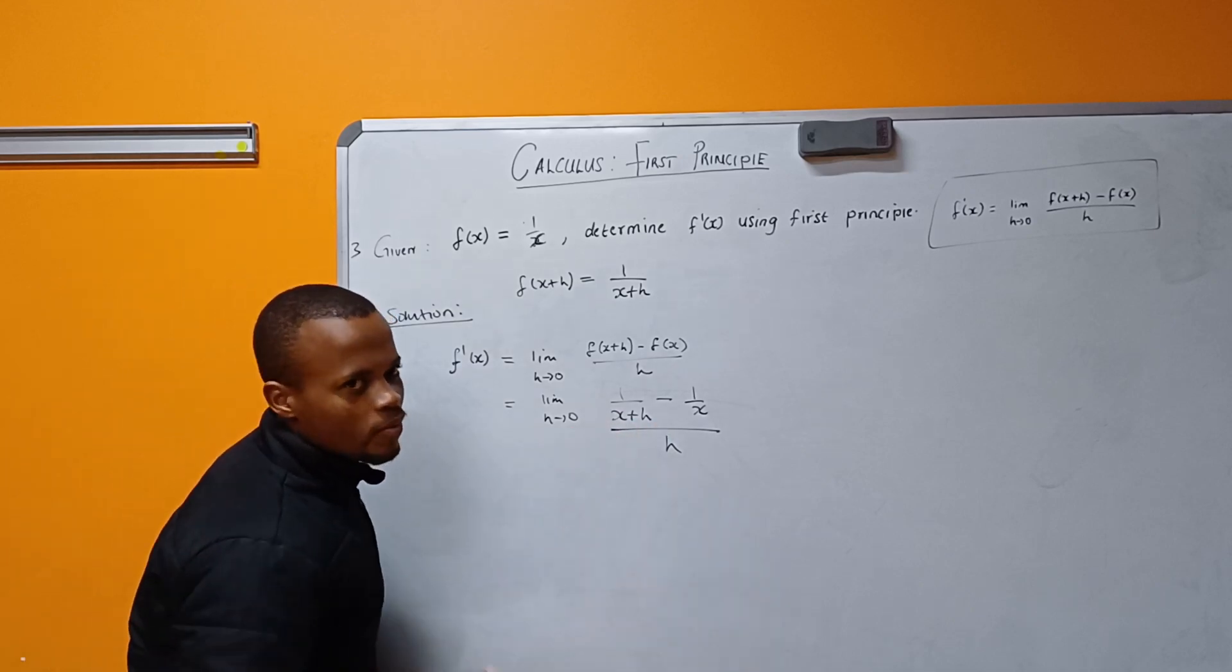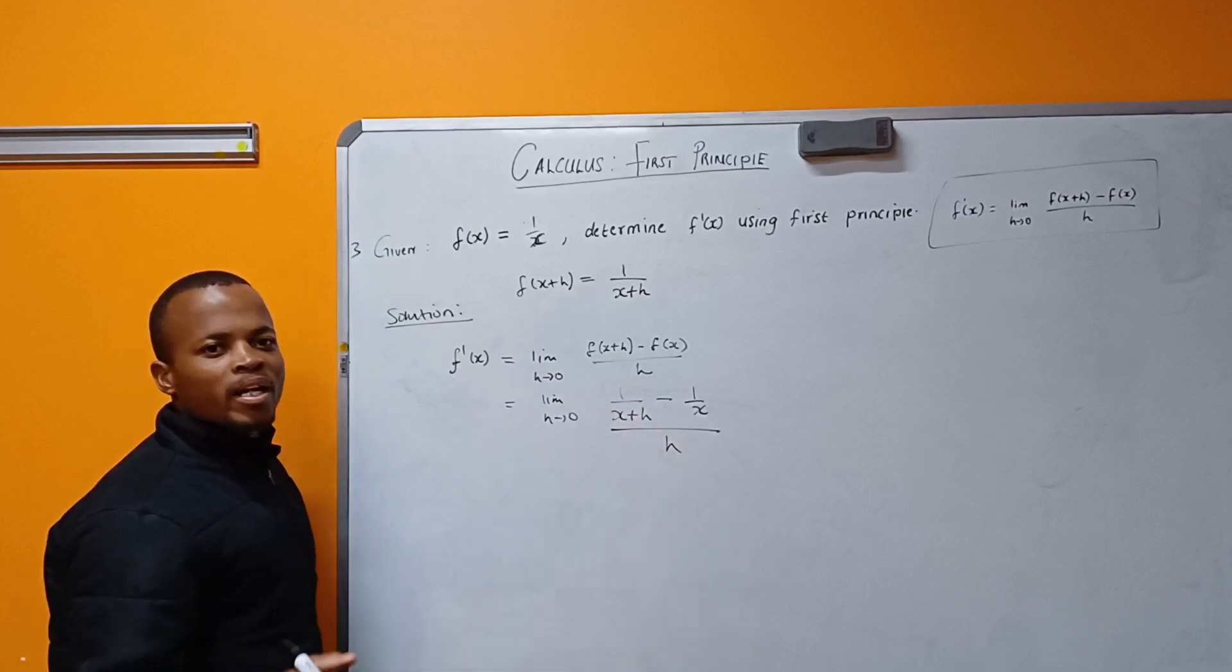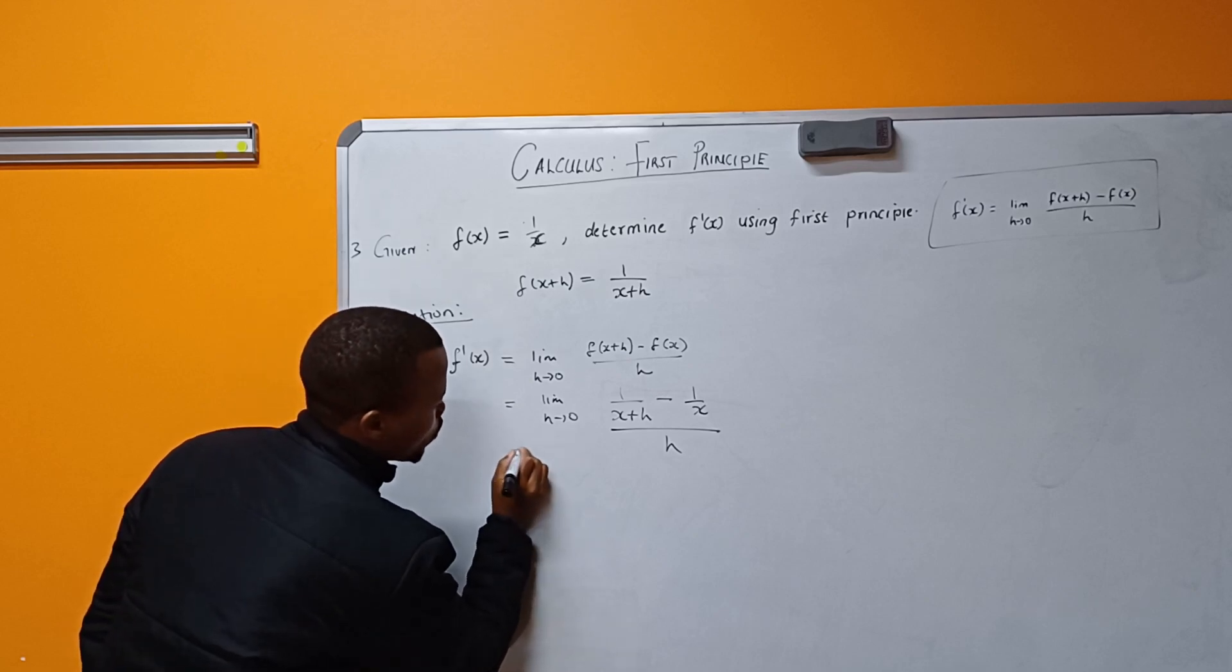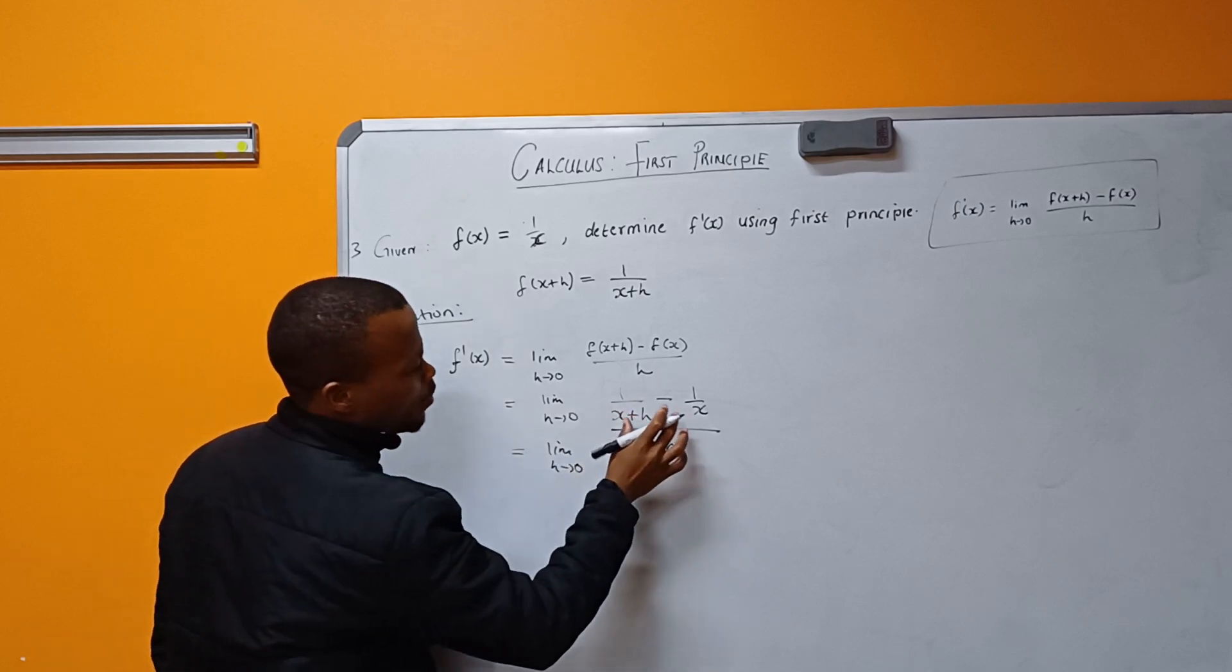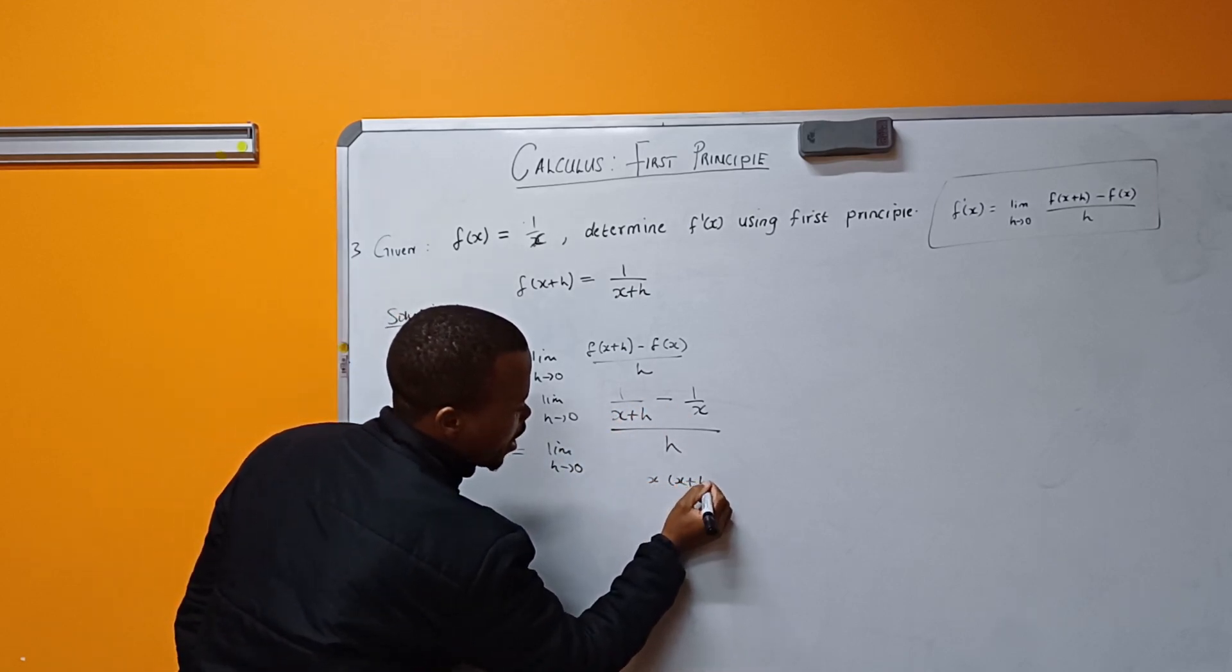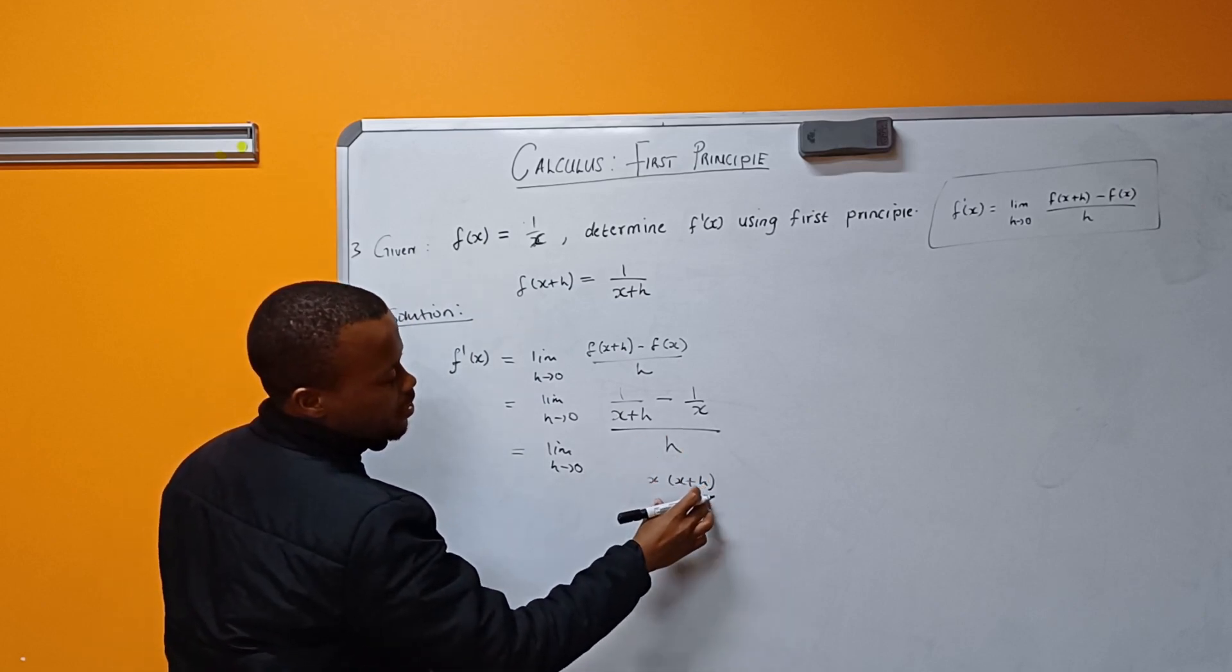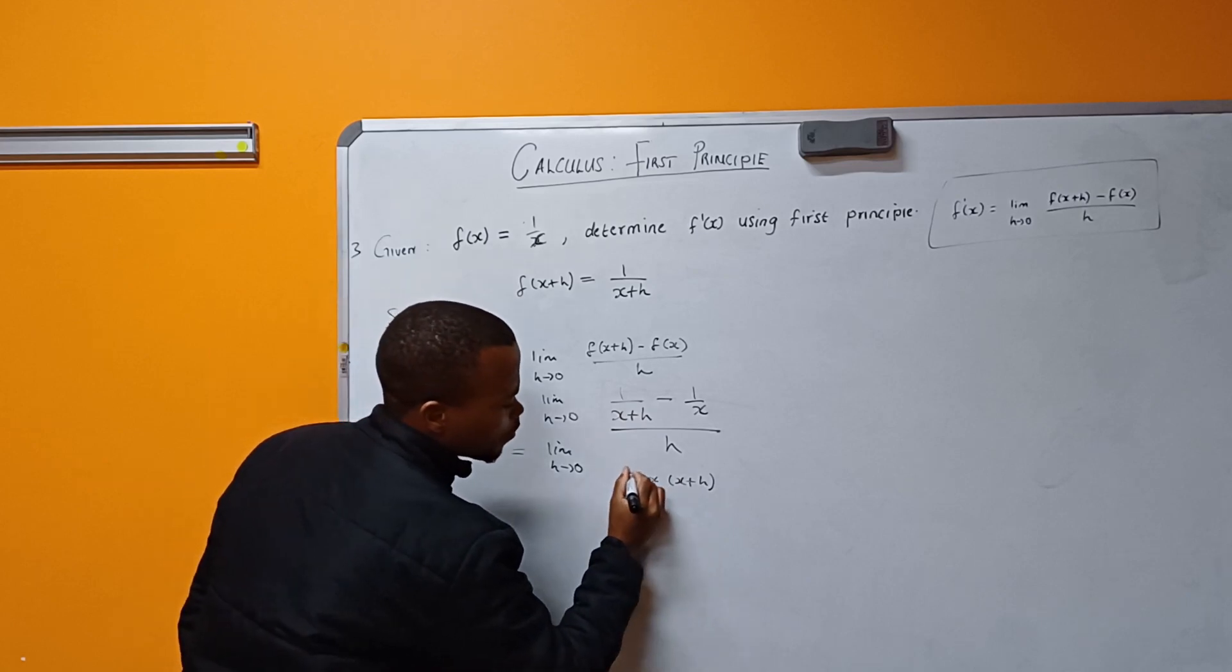What is the next step? The next step is to find the LCD when you work with terms being separated by the operation plus or minus. So here, limit as h approaches zero, I will take x(x+h) to be my LCD for this top fraction.